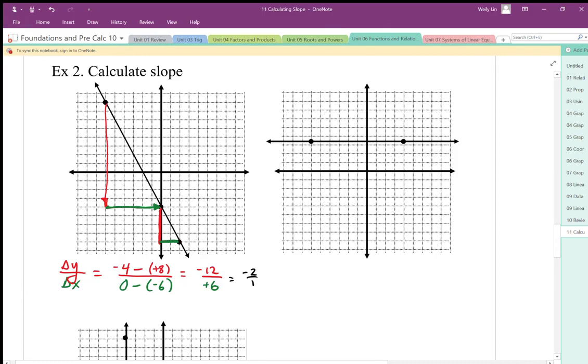And we could have gotten the exact same slope by looking at the smaller triangle. The smaller triangle has a rise of, in this case, negative 4 compared to positive 2. That's going to give us the same ratio of negative 2 to 1.